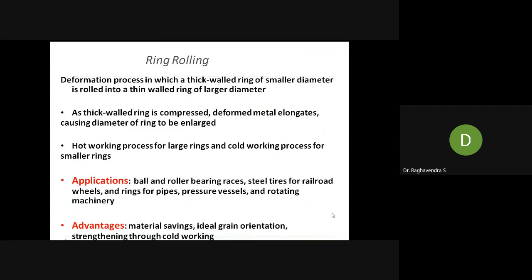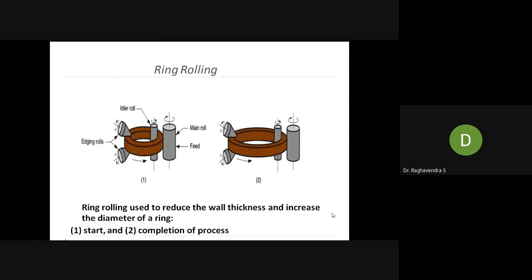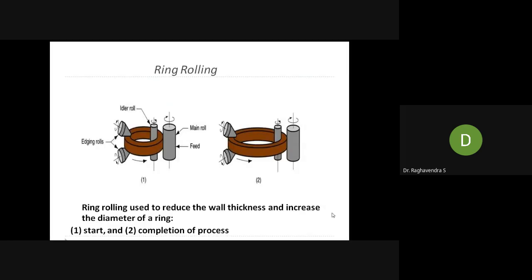Ring rolling is another process used to manufacture rings for bearings and other applications. It requires a specific configuration with two rollers to maintain the thickness and diameter of the ring. This concludes this session, and the next class will continue with a new video. Thank you.